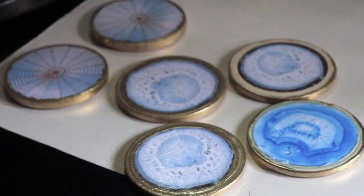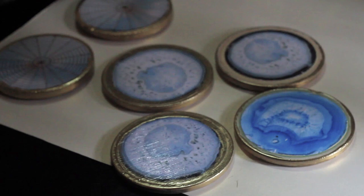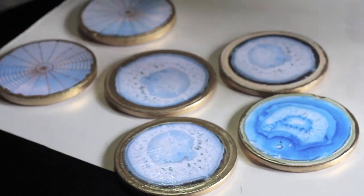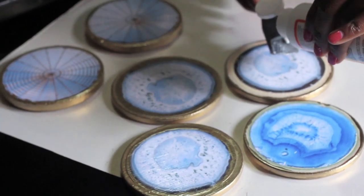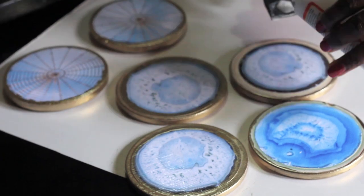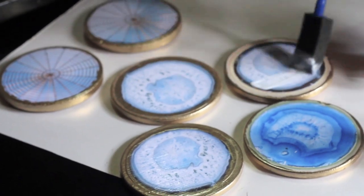After the gold spray has dried up, you come back and do another layer of the mod podge and then seal even the edges.